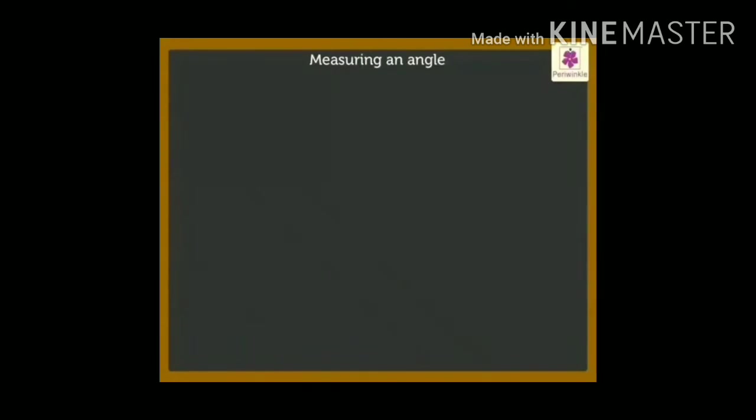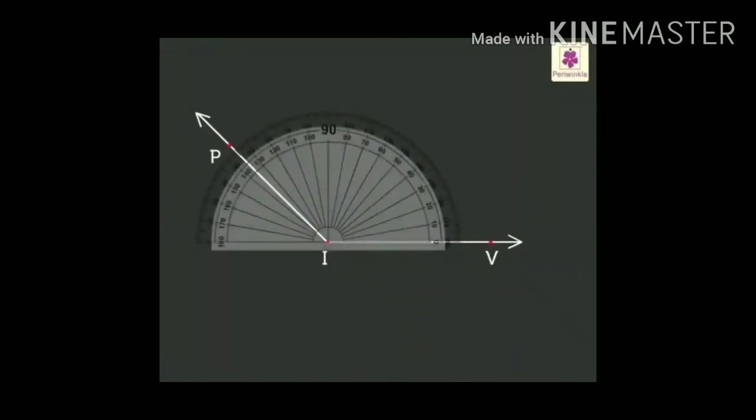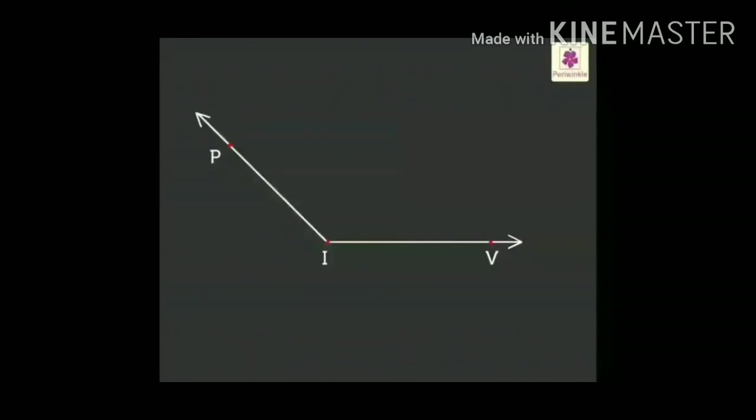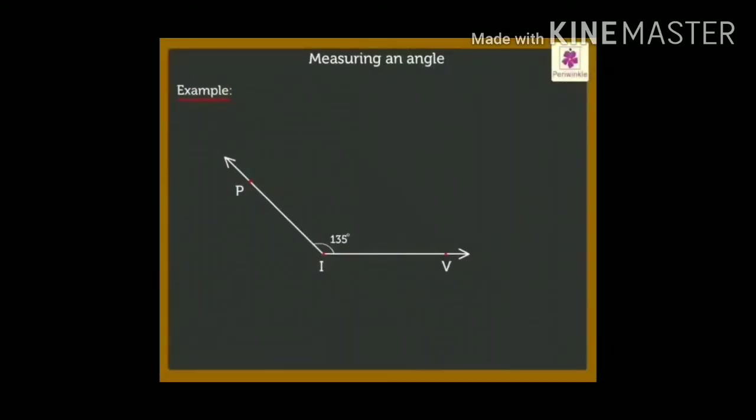Now again we can have one more example. Look at here, in this diagram. The diagram PIV. When you keep your protractor over here, on the central point of the protractor must be joining at the point I. We observe that it is 135 degree. Therefore, angle PIV measuring 135 degree with the help of a protractor.